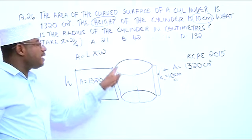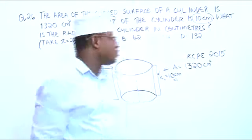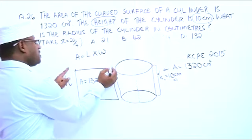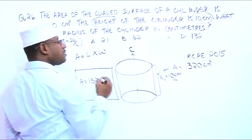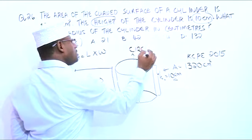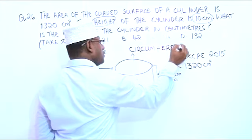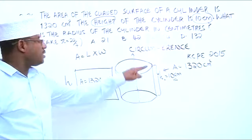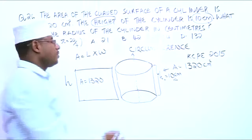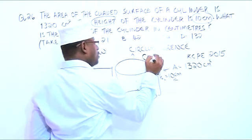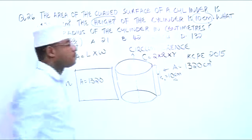How do we get the distance round a circle? The distance round a circle is known as circumference. The circumference C is equal to 2 times pi times radius — 2πr.